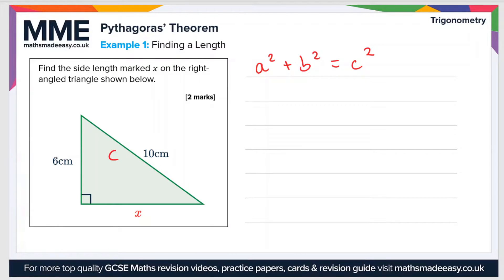The easiest thing is c, because that's the longest side, which is the hypotenuse. So c equals 10 centimeters. And then as for a and b, it doesn't actually matter which one we choose as a and which one we choose as b. So let's just say that a is this 6 centimeter side, and b equals x.